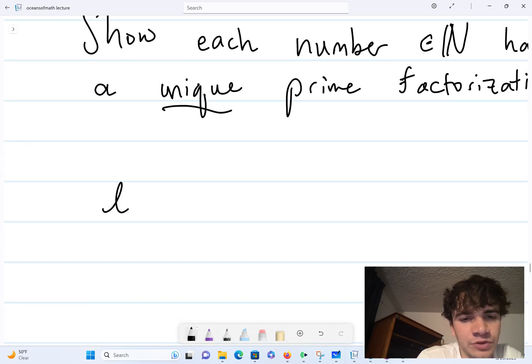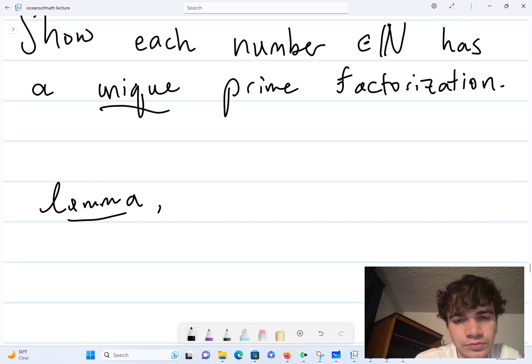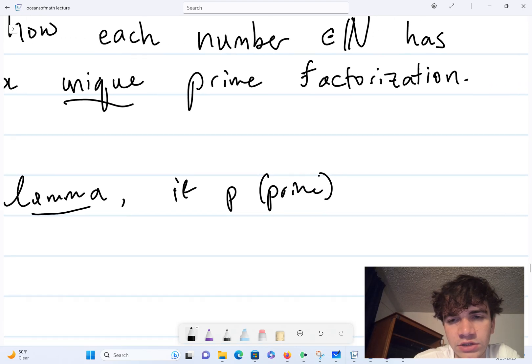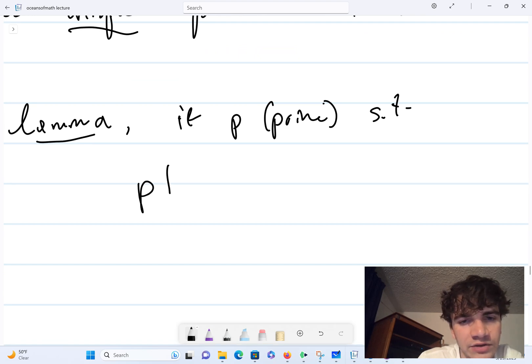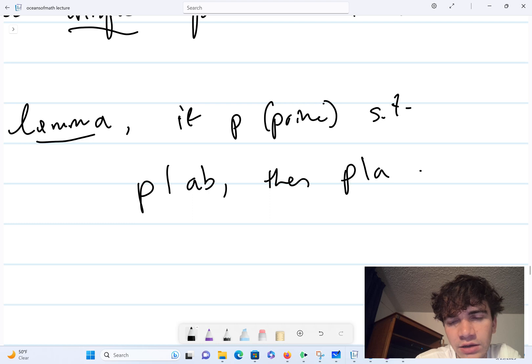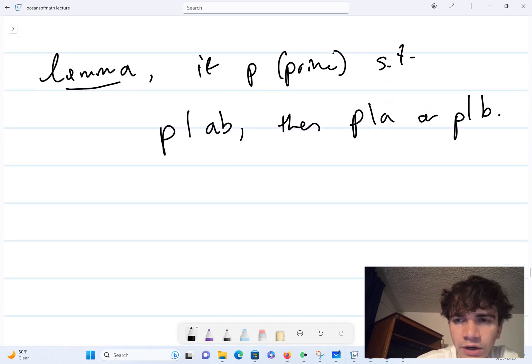Now to prove this, I'm going to start with a lemma. So my lemma is that if p is a prime number such that p divides ab, then p divides a or p divides b. And this lemma I believe is due to Euclid.